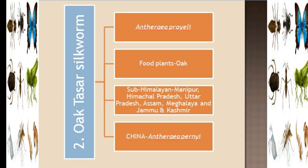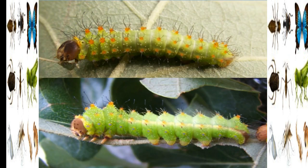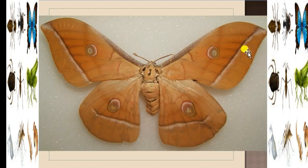The next species is the Oak Tassar Silkworm. Unlike the Tassar Silkworm which feeds on Asan and Arjun, the Oak Tassar Silkworm's food plant is Oak. The scientific name of the Oak Tassar is Antheraea proylei. It is found in the Himalayan regions of Manipur, Himachal Pradesh, Uttar Pradesh, Assam, Meghalaya, and Jammu & Kashmir — across North and North-Eastern states.